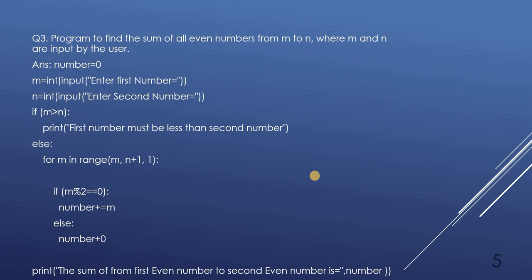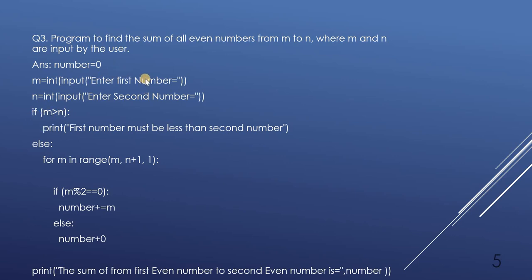Then we check: if M is greater than N, we print the message 'first number must be less than second number'. This validation is needed because we are finding even numbers from M to N — for example, if the user enters 1 and 10, we want even numbers between 1 and 10. If M is greater than N the range would be invalid, so we display that error message.